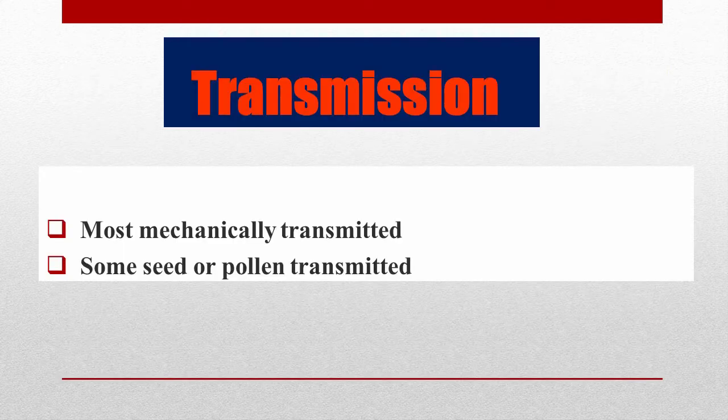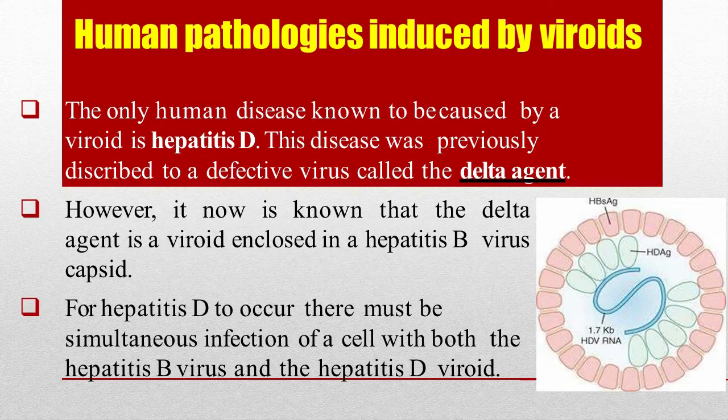Viroids are transmitted mostly mechanically. Some are seed or pollen transmitted. The only human disease known to be caused by a viroid is Hepatitis D. This disease was previously attributed to a defective virus called the delta agent.